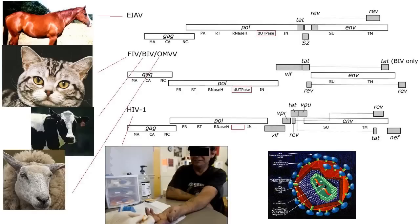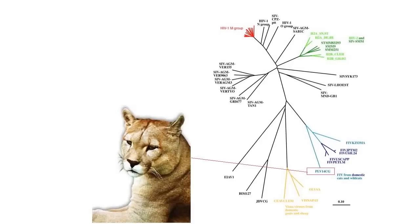HIV is a lentivirus on the basis of its genome and life cycle — not all that unusual for the lentiviruses. It infects immune cells, primarily CD4 positive T cells and macrophages. The other lentiviruses pursue similar, if slightly different, life cycles. There are lentiviruses that infect cats, goats, horses, sheep, cows, and monkeys. There's even a puma lentivirus. Not all of them cause disease under certain conditions.